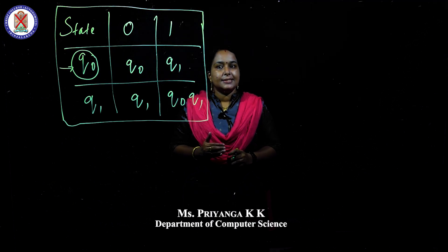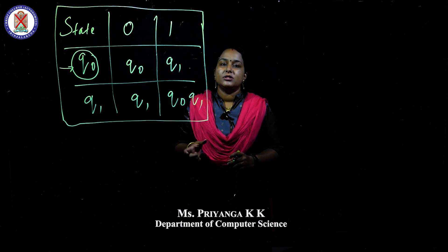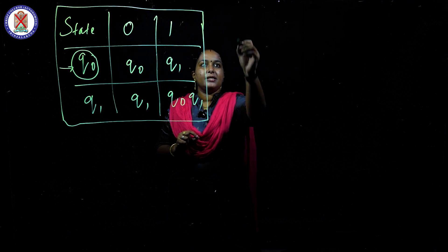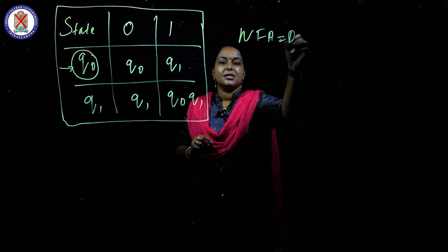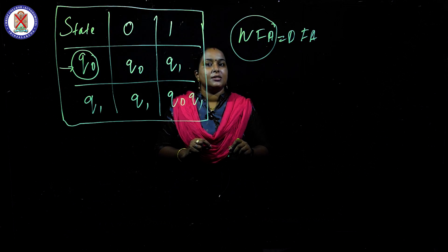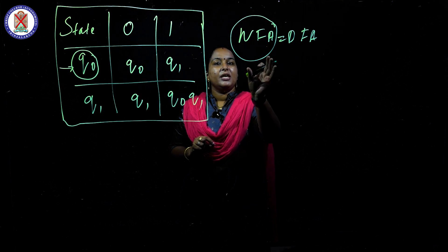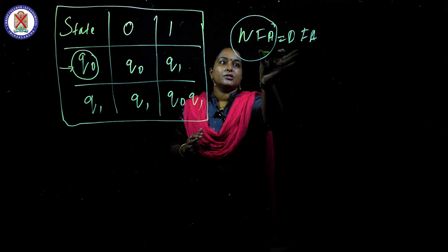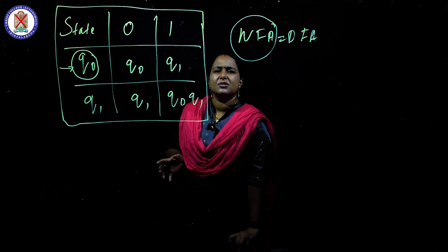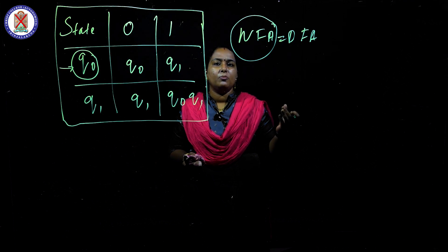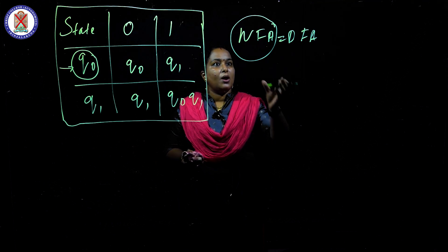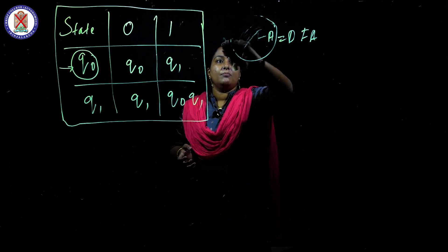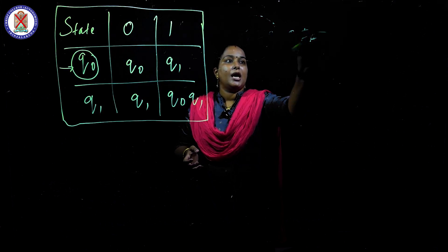Hi everyone. We have already discussed deterministic finite automaton and non-deterministic finite automaton. In the video on NFA, I said NFA is equal to DFA — that is where the scientists discovered NFA and made the automata flexible, but the result is equivalent to DFA. No further modification comes in the power — meaning ability or computability — what NFA can do can also be done by DFA.